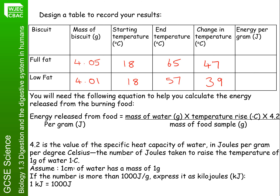We're now going to convert those changes in temperature into an actual value of the energy released. We have an equation: the energy released from the food per gram equals the mass of water, times the temperature increase, times 4.2, then divided by the mass of the food sample.